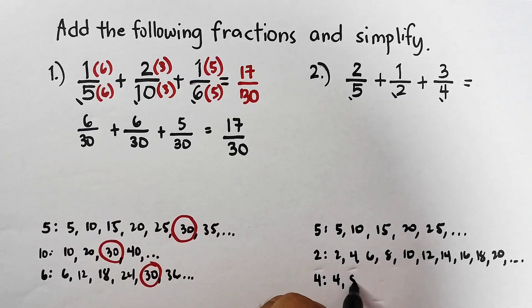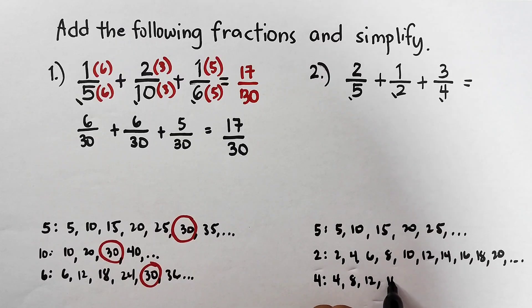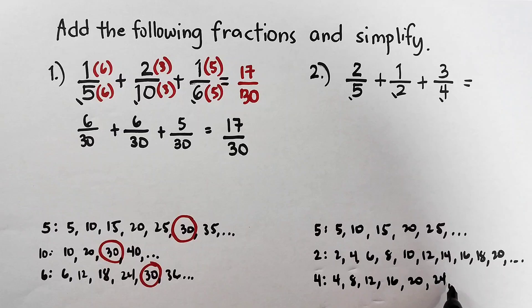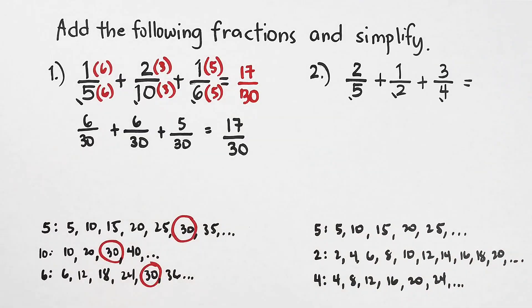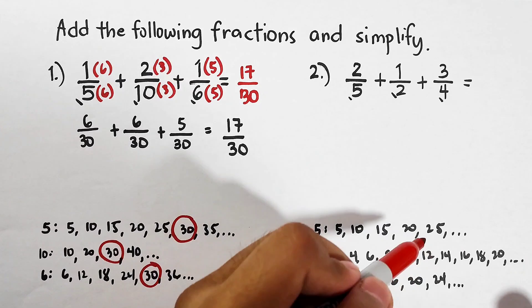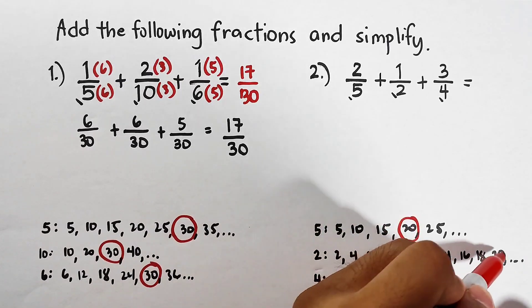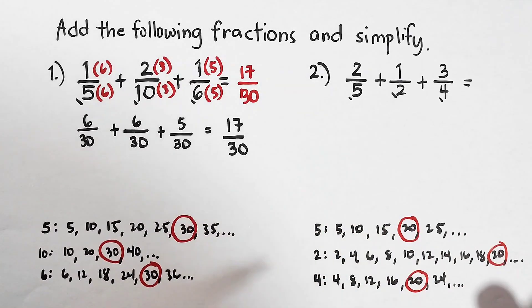2, 4, 6, 8, 10, 12, 14, 16, 18, 20. We will stop here first, and so on. For the 4s, the multiples of 4 are 4, 8, 12, 16, 20, 24, and so on. As you can see, we have the least common multiple which is 20.